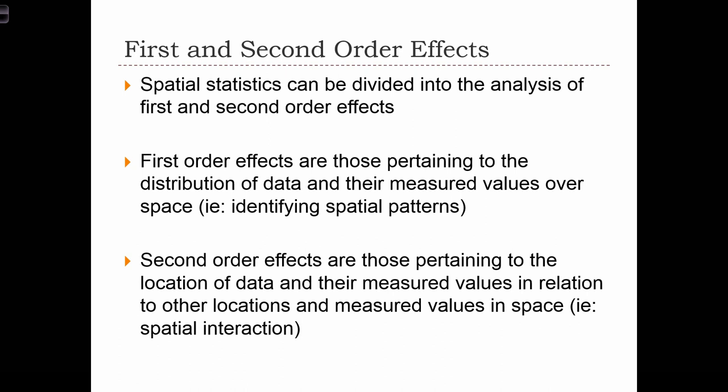Second order effects are those pertaining to the location of data and their measured values in relation to other locations or measured values in space. We saw this a few lectures ago when talking about locations of waterfalls and how far away they are from the nearest highway. That would be an example of a second order effect because we're looking at the relationship between two entities in space. It's not the absolute locations of the waterfalls that mattered; instead, it was the relative location of the waterfall to the highway.